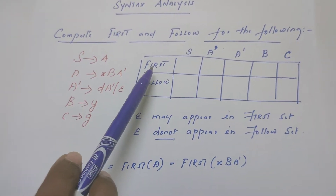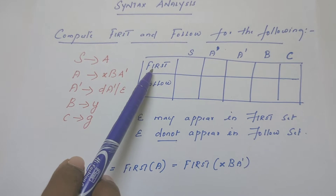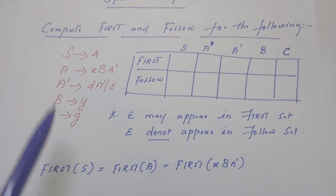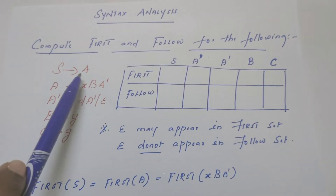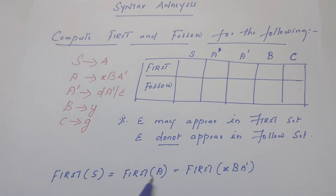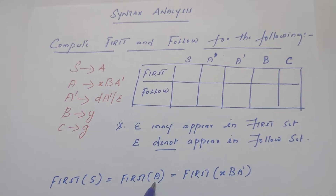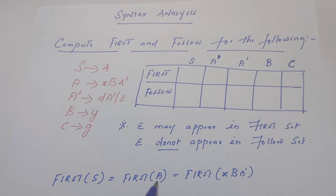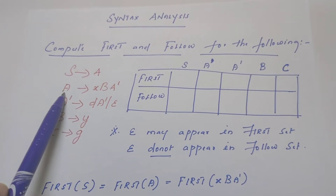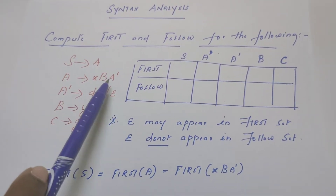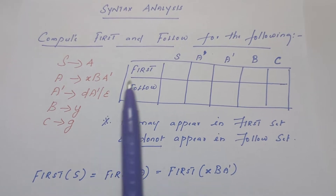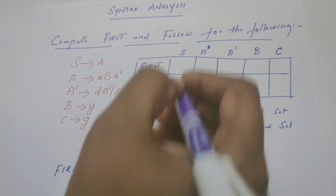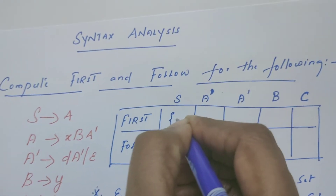Okay, first we start computing the first set of all the symbols. I have taken the first row of S. What is the rule for S? S derives A. So S is replaced by A. Since A is a non-terminal, a variable, I should check what is the rule for A once again. A is defined as XBA dash. Out of this, the first symbol is nothing but X. So, first of S is X.